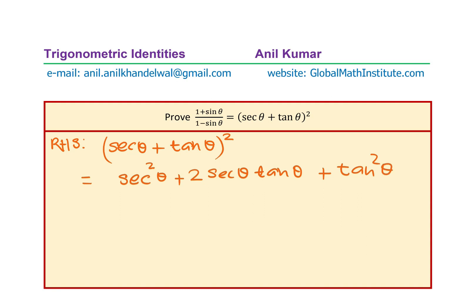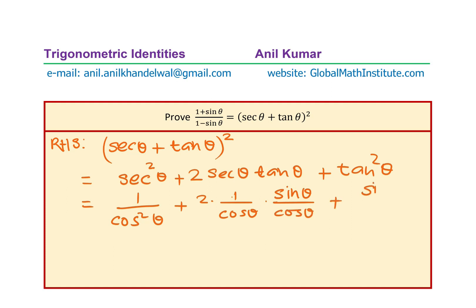Now we can write this in terms of sine and cosine. What we get is 1 over cos squared theta plus 2 times — secant is 1 over cos theta — and tan is sine theta over cos theta. We find that cos squared theta is common in the denominator, and therefore we can write cos squared theta in the denominator.